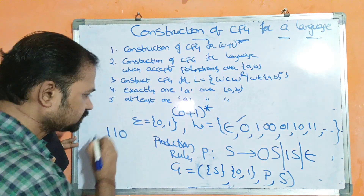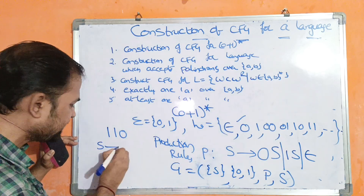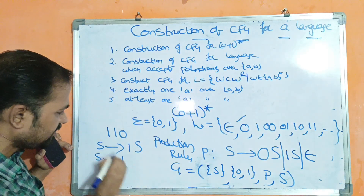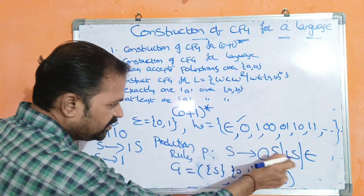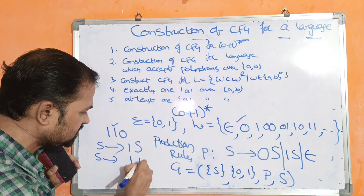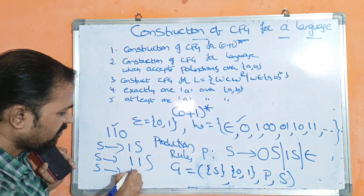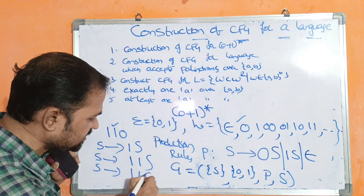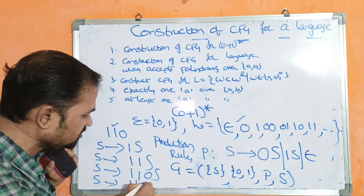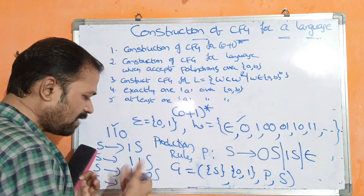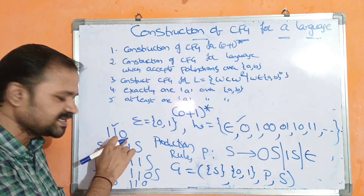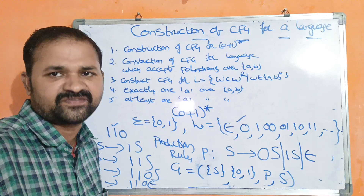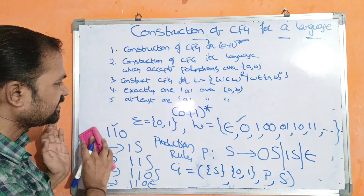How to get 1,1,0? S implies 1S — the string starts with 1, so we take 1S. After the first 1 we still have 1, so S implies 1S again. After the double 1 we have 0, so S implies 0S. Now S should terminate, so S implies epsilon. Thus 1,1,0,ε = 1,1,0. Our CFG is correct.